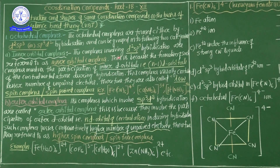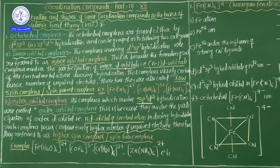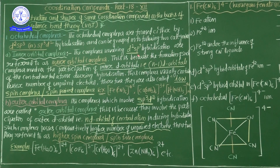In this session we are going to discuss, based on VBT theory, how the formation of coordination compounds takes place. The topic of this session is: structure and shapes of some coordination compounds on the basis of valence bond theory. This is the most important part at board level and also NEET level, so every student should watch very carefully.